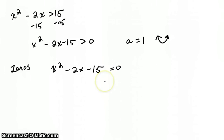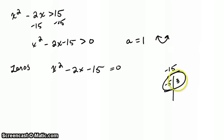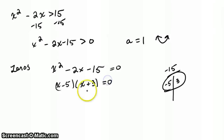Now we'll solve for x. We can't solve by taking the square root, so I think it's easiest in this case to solve by factoring. We want to find factors of negative 15 that add up to negative 2. Right away I'm thinking of negative 5 and 3, because those multiply together to get negative 15, and negative 5 plus 3 gives us negative 2. So then we have x minus 5 times x plus 3 equals 0. So my zeros will be x equals 5 and x equals negative 3. Those are my two zeros.